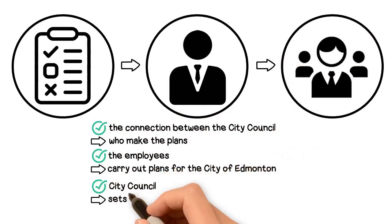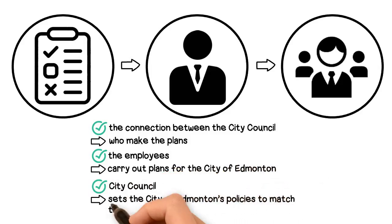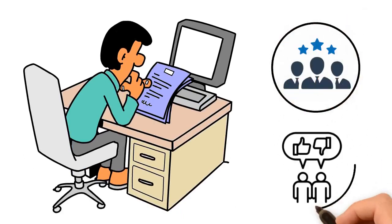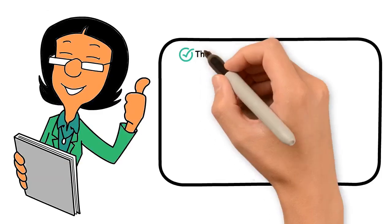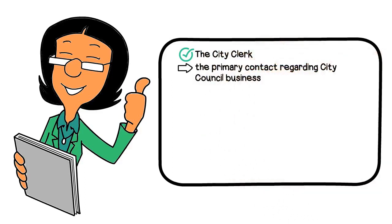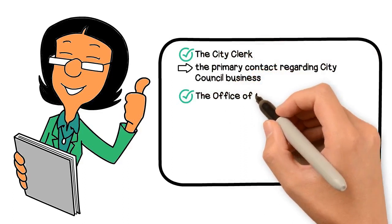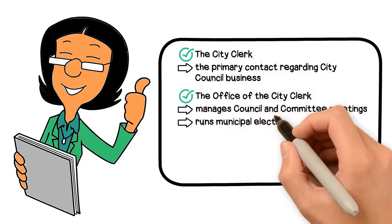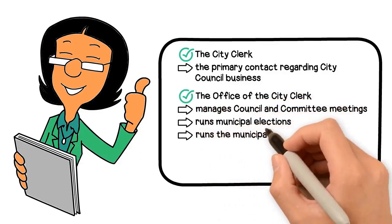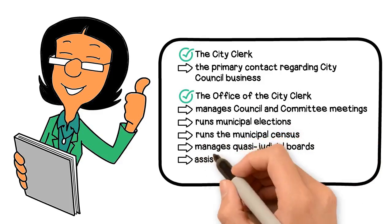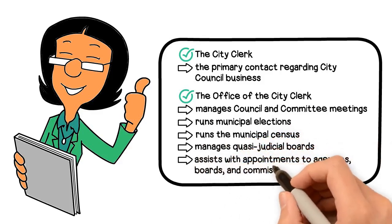City council sets the city of Edmonton's policies to match the needs of its residents. When making decisions, city council considers the advice of expert employees as well as opinions of the public. The city clerk is the primary contact regarding city council business. The office of the city clerk manages council and committee meetings, runs municipal elections, runs the municipal census, manages quasi-judicial boards, and assists with appointments to agencies, boards, and commissions.